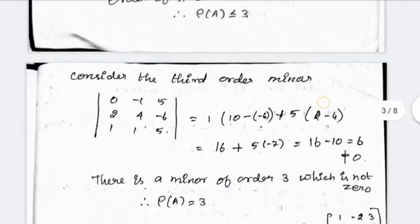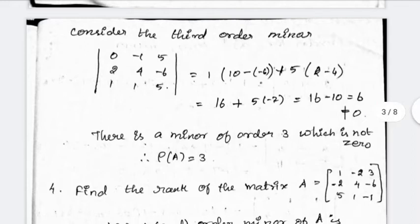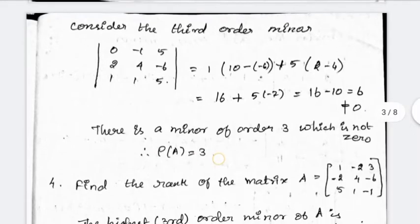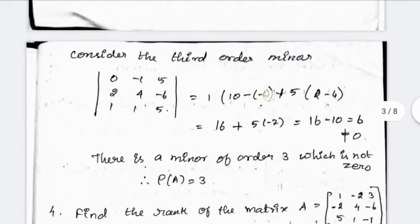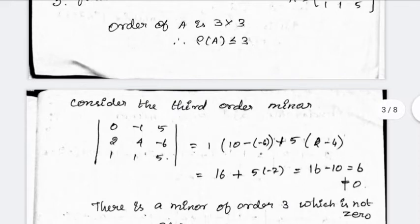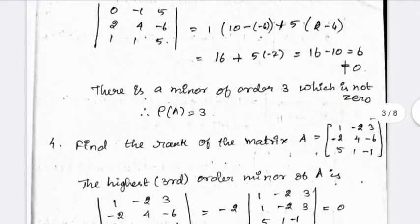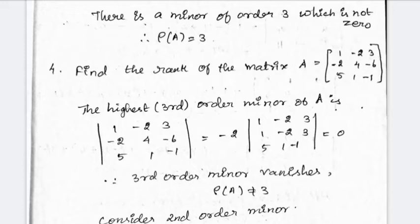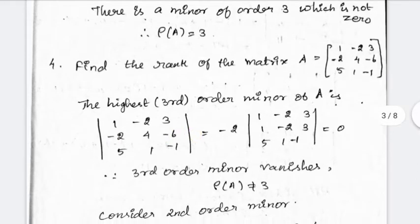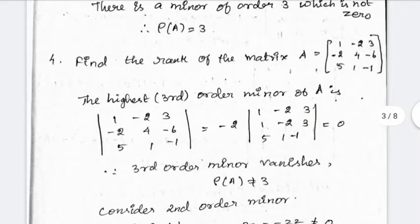This is a 3×3 matrix. The rank of the matrix is less than or equal to 3. Let's see: for a 3×3 matrix, if the determinant equals 0, we go down to the second order. I will put this third-order minor first. If you have the third-order determinant and it's not equal to zero, rank is 3; if equal to 0, we check second-order minors.